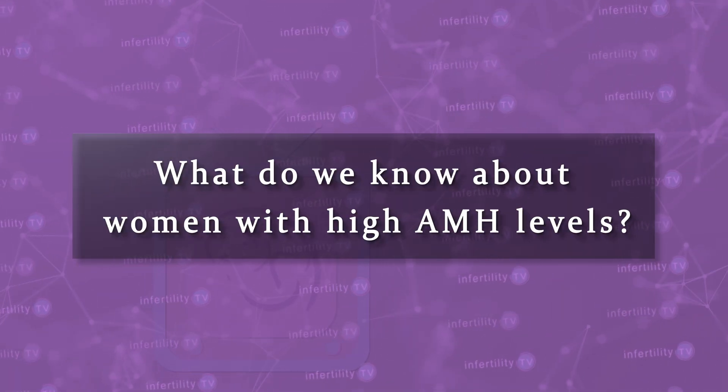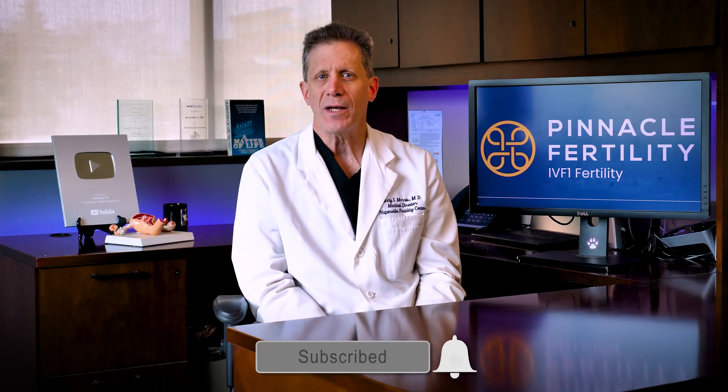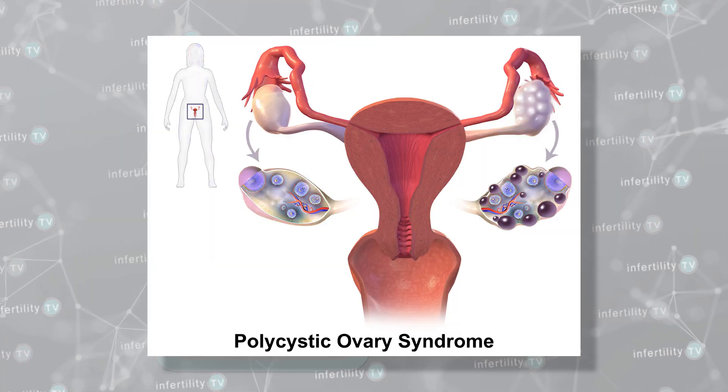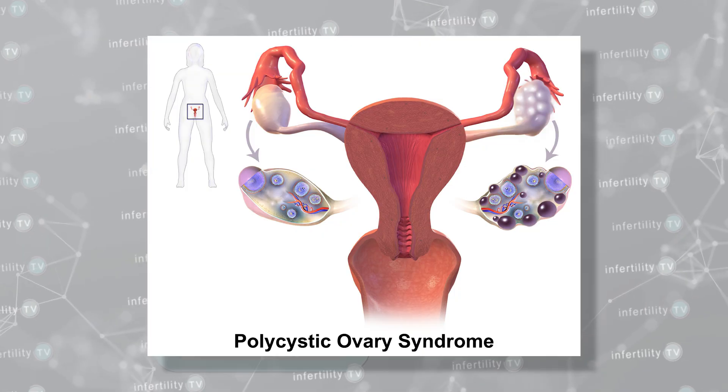Now that you know how to determine if your AMH level is high, what do we know about women with high AMH levels? They tend to be the opposite of women with low AMH levels in many ways. Whereas women with low AMH levels do not respond well to fertility medications, women with high AMH levels tend to respond very vigorously to fertility medications. Most fertility doctors will look at these levels to predict how someone will respond and then make adjustments to the dose of medication they prescribe. It has been known for some time that women with polycystic ovary syndrome, or PCOS, tend to have higher AMH levels.